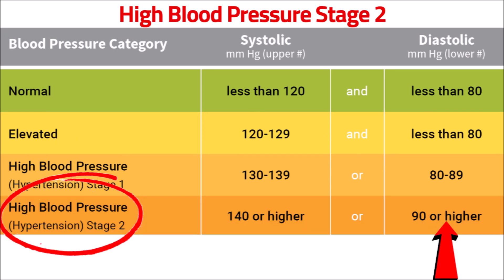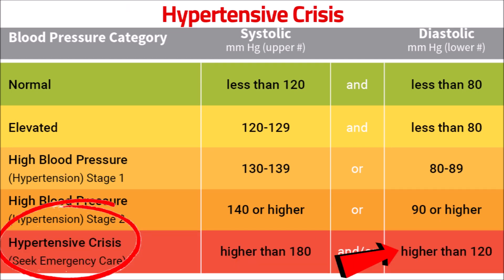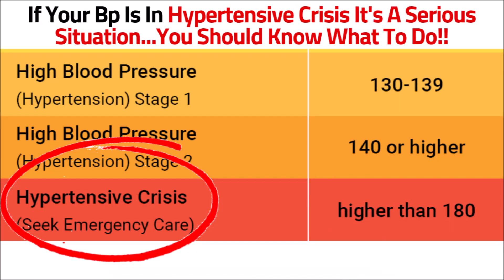If diastolic is 90 or higher, then your blood pressure is in the high blood pressure range — stage two — regardless of your systolic number. If diastolic is higher than 120, then your blood pressure is in hypertensive crisis. If your blood pressure is in hypertensive crisis, it's a serious situation and you should know what to do.